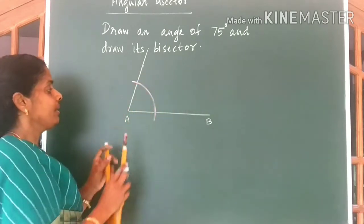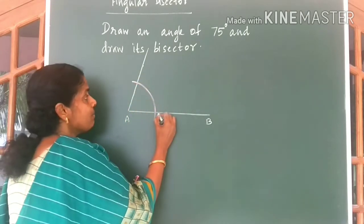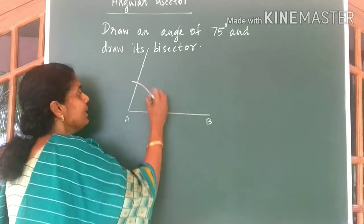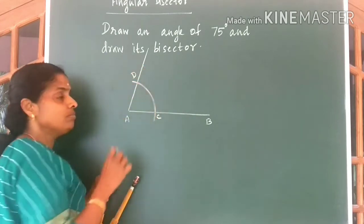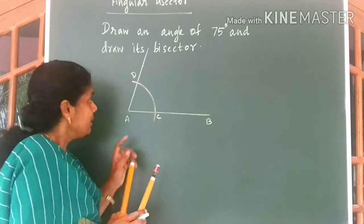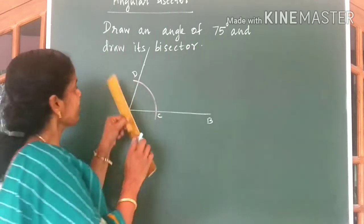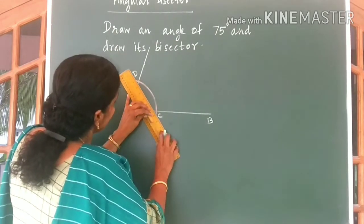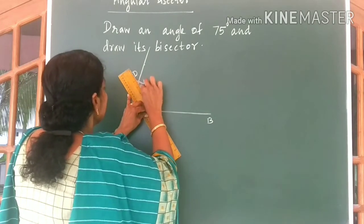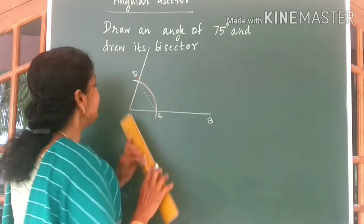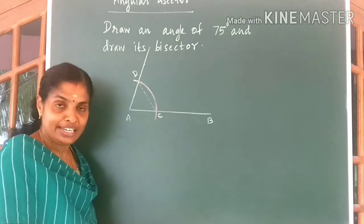See, I have drawn an arc. Now let us name this point as some C and D. Okay. Now let us join C to D. I am joining C to D. I have used dotted lines to join.